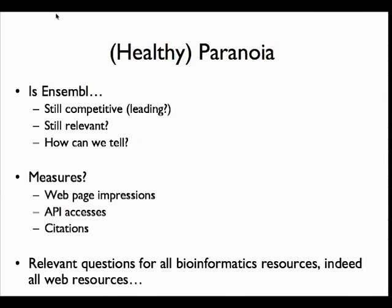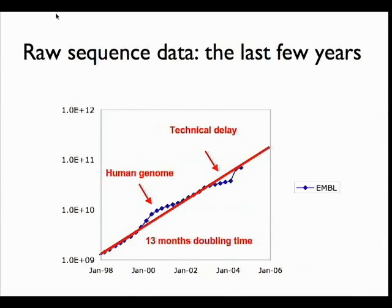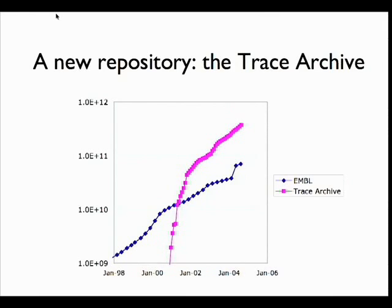There are lots of interesting things happening connected with data. This is sequence growth. People may think we sequenced the human genome and then it all went away — not true at all. The assembled sequence is following pretty much a 13-month doubling time, and it's kept on doing that. We've also constructed a new archive for the raw unassembled sequence, because there's a lot that comes out of sequencing machines that never gets assembled into full genomes but is still useful data to search. That's doubling every 11 months, and the database for that is currently 35 terabytes — one of the bigger Oracle databases out there.